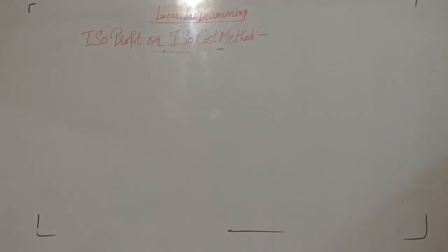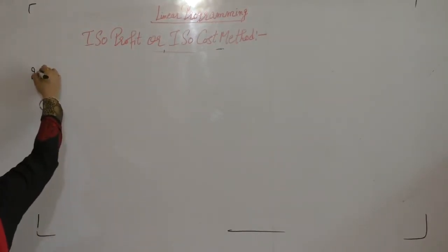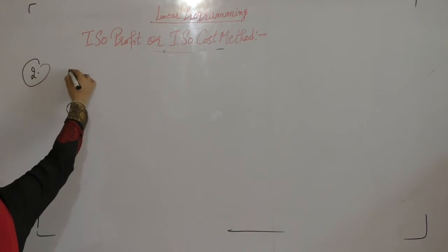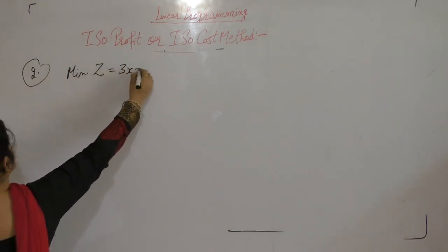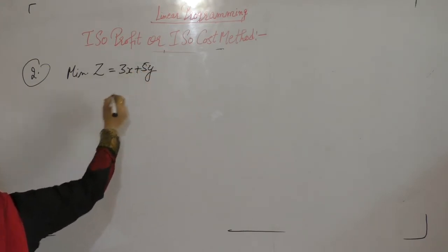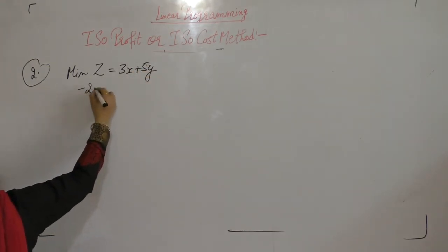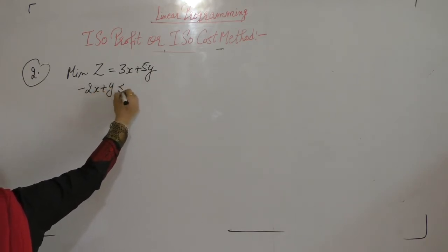Now the second question is, solve the following LPP graphically. Minimize Z equals 3x plus 5y subject to minus 2x plus y less than or equal to 4.